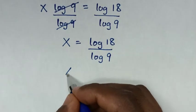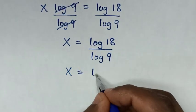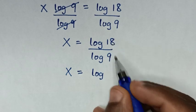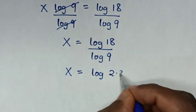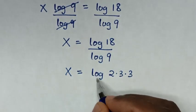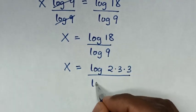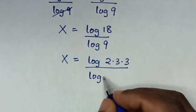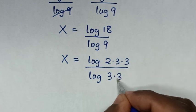Then in the next step, x is equal to log of 18, which is the same as 2 times 3 times 3, over log of 9, which is the same as 3 times 3.